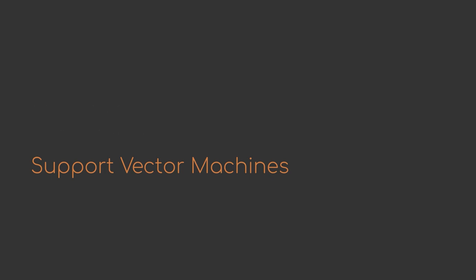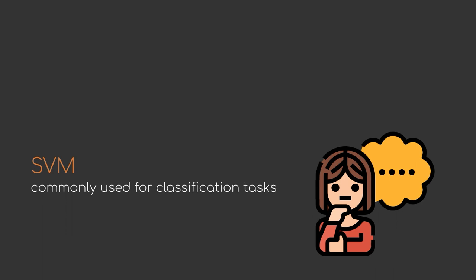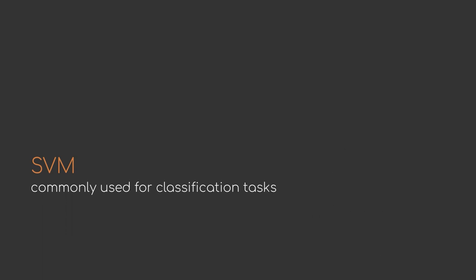First, let's take a closer look at support vector machines, which we abbreviate with SVM. So what exactly is an SVM? An SVM, simply put, is a model which is commonly used for classification tasks. It can also be used in the regression setting, but we will focus on classification.